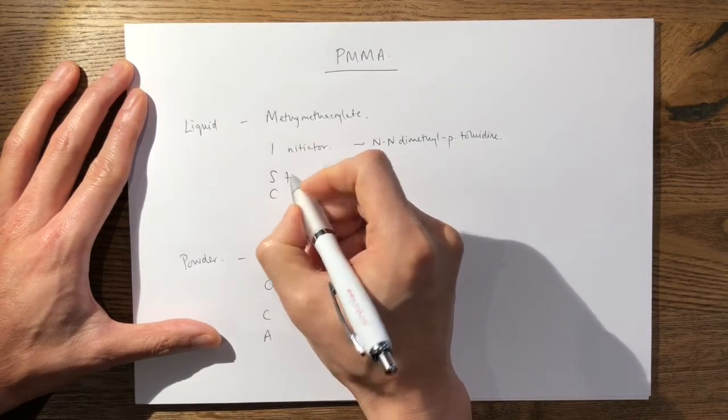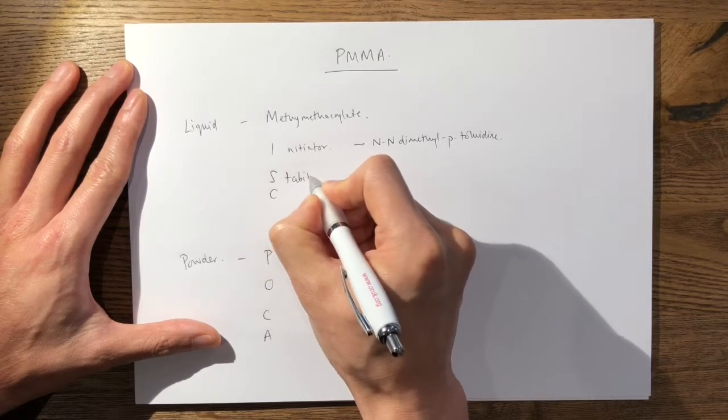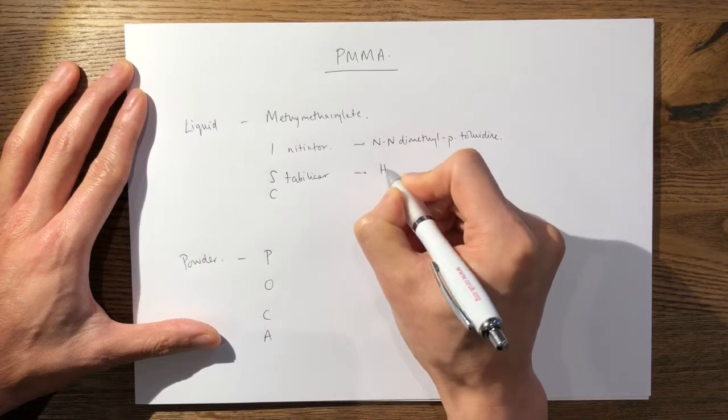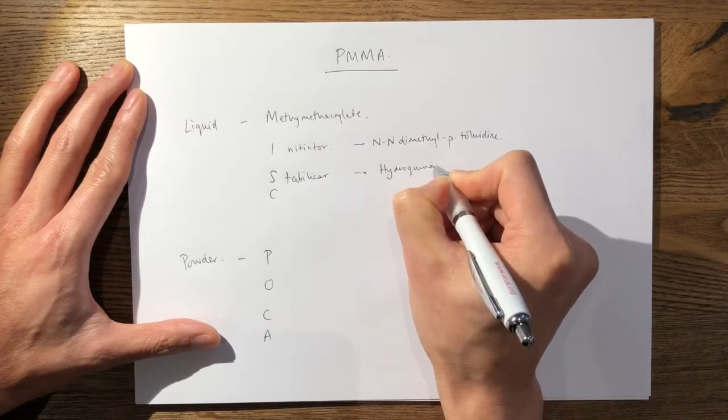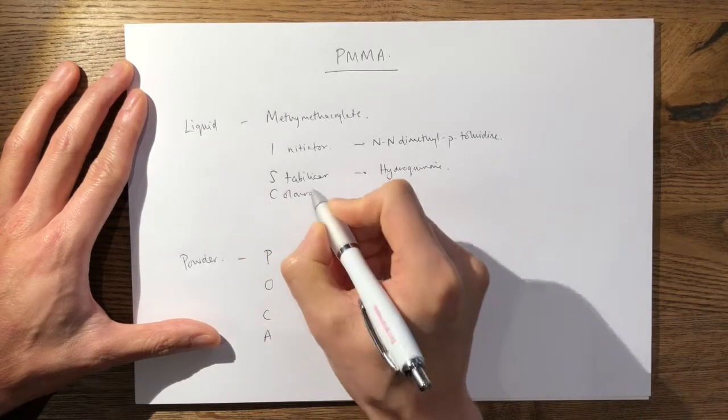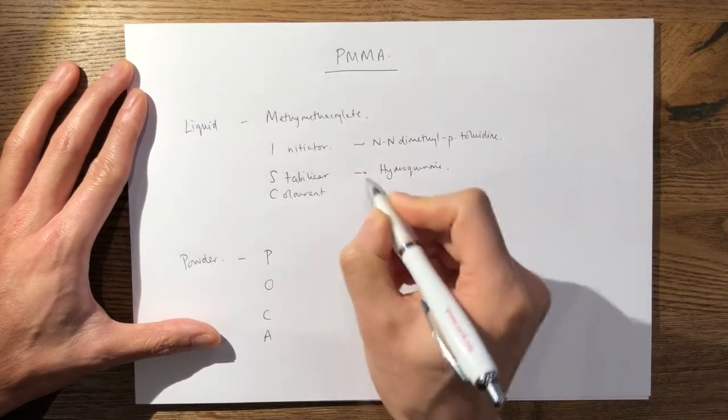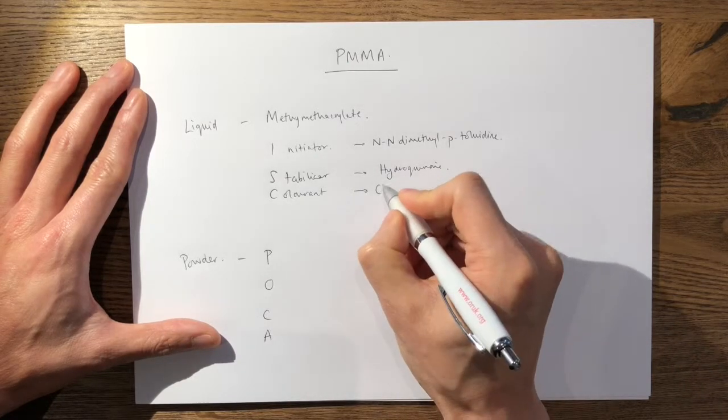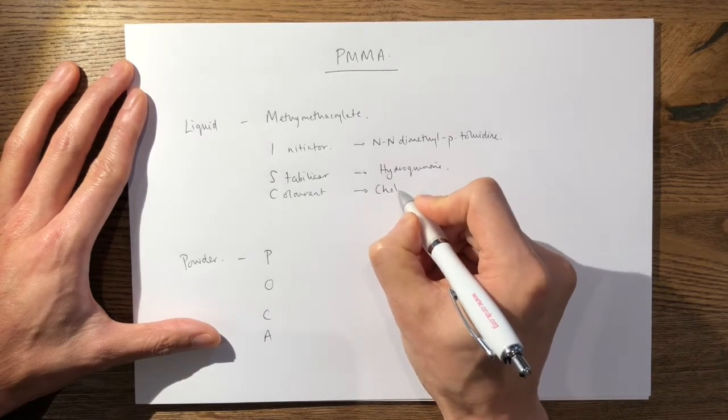The S stands for a stabilizer, and this is hydroquinone. The C is your colorant so you can see what color your cement is from its surrounding tissues. In the liquid, chlorophyll is used.